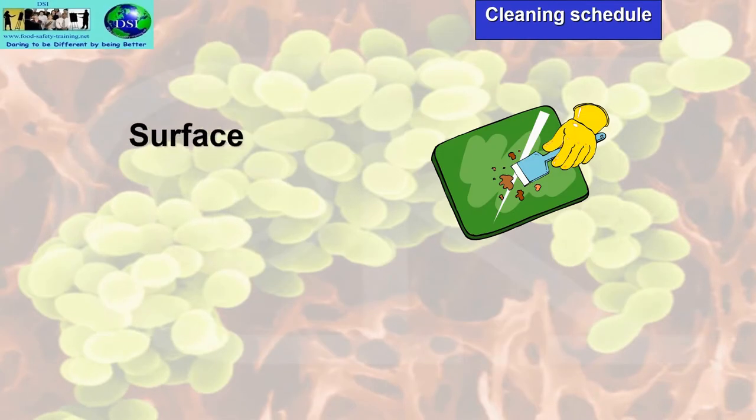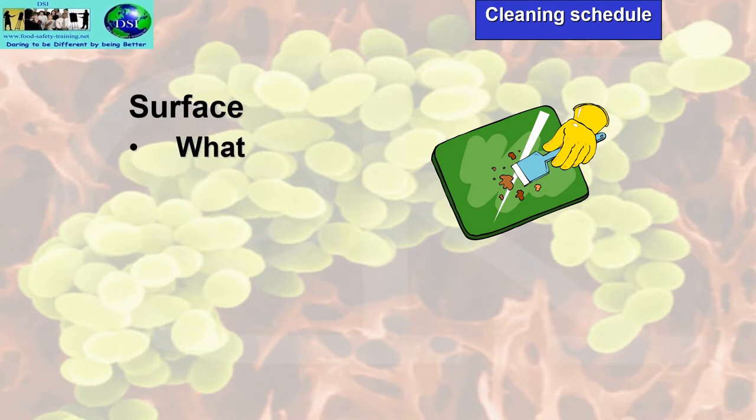A cleaning schedule is documented — it records what needs to be cleaned and when. This is not clean as you go, which is done naturally after you make a mess. A cleaning schedule goes even further: it documents who needs to clean what, and the type of surface to be cleaned.